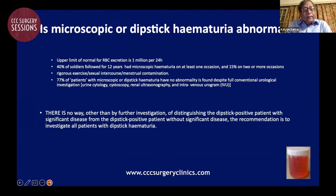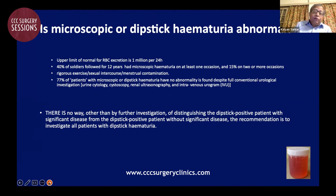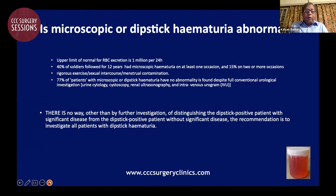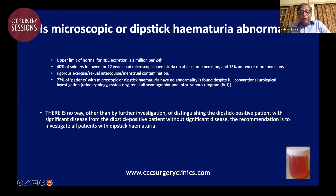Is microscopic or dipstick hematuria abnormal? As mentioned, up to three RBCs per high power field is normal, and the upper limit of normal for RBC excretion in the urine is 1 million per 24 hours. Soldiers followed up for 12 years showed that 40 percent had microscopic hematuria on at least one occasion and 15 percent on two or more occasions. These were often associated with rigorous exercise, sexual intercourse, or menstrual contamination. As many as 77 percent of patients with microscopic or dipstick hematuria have no abnormality.